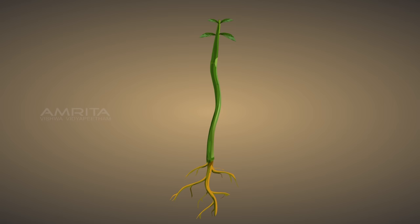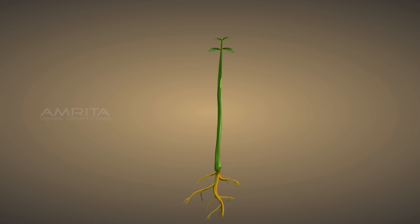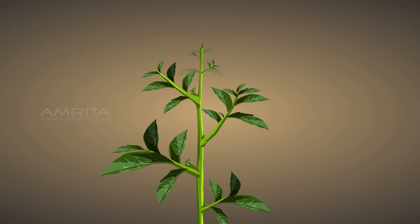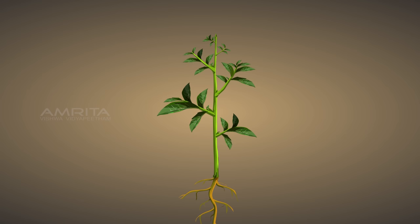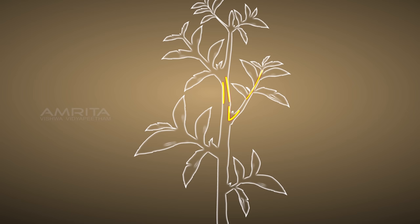The tissue that helps increase the length of the stem and the root is the apical meristem, located at the tips of stems and roots. The lateral meristem, located at the lateral position of the stem or root, helps in increasing the diameter of the plant body. The intercalary meristem facilitates the growth of leaves and branches. In grass, these regenerate the parts removed by grazing herbivores. It is located at the base of the nodes, internodes and on leaf bases.